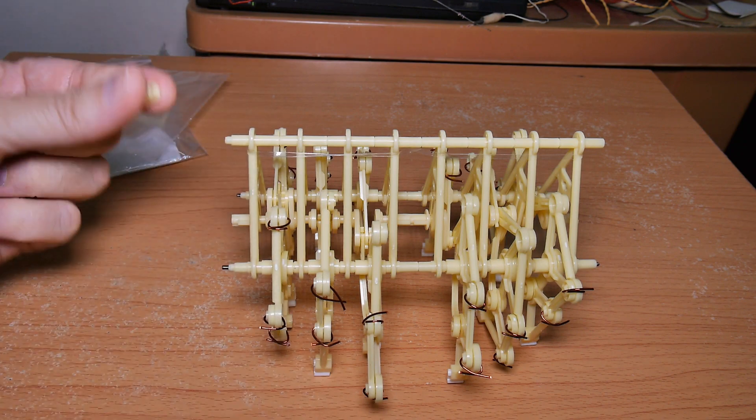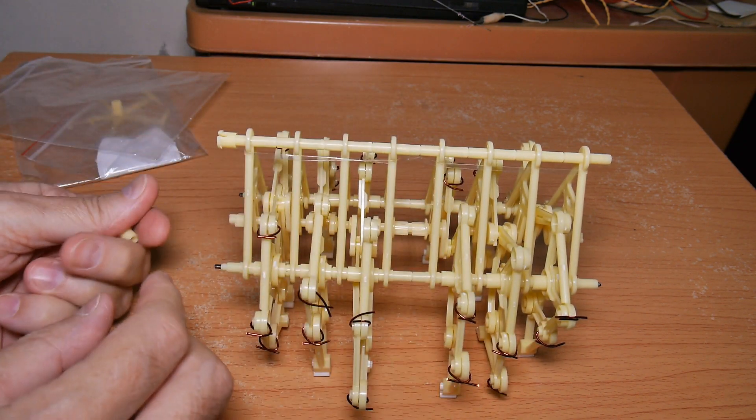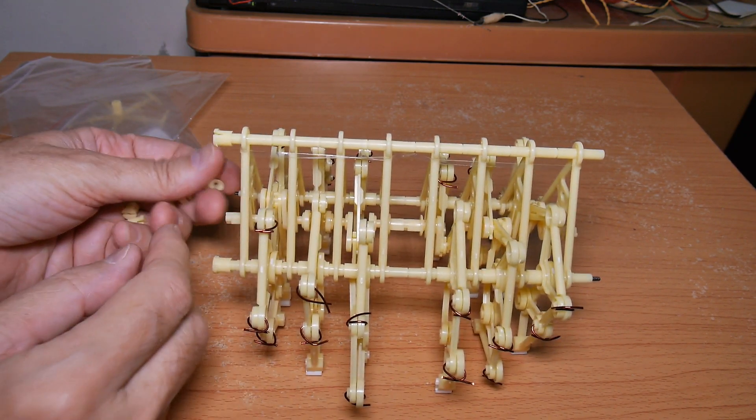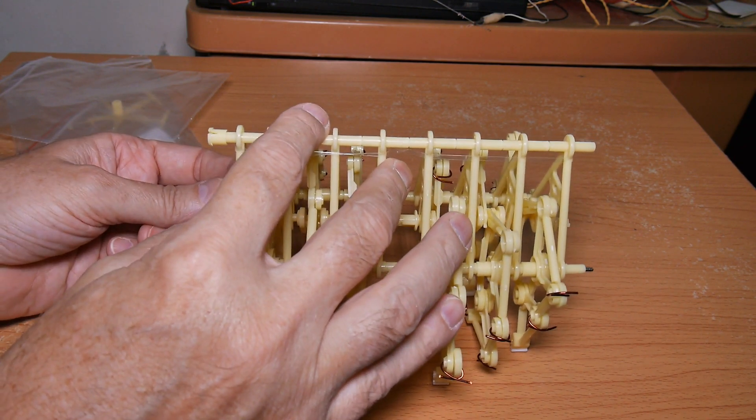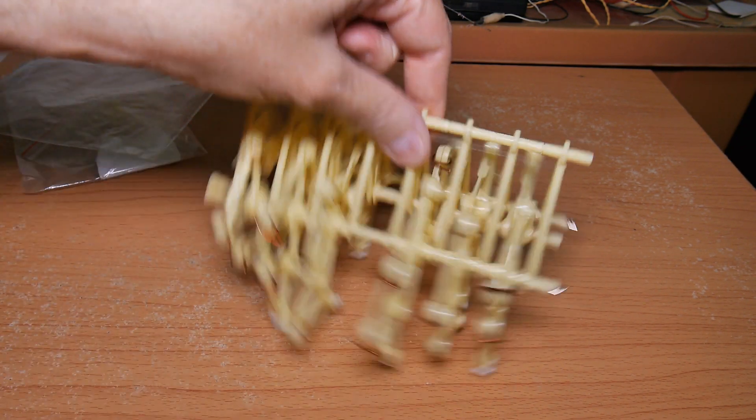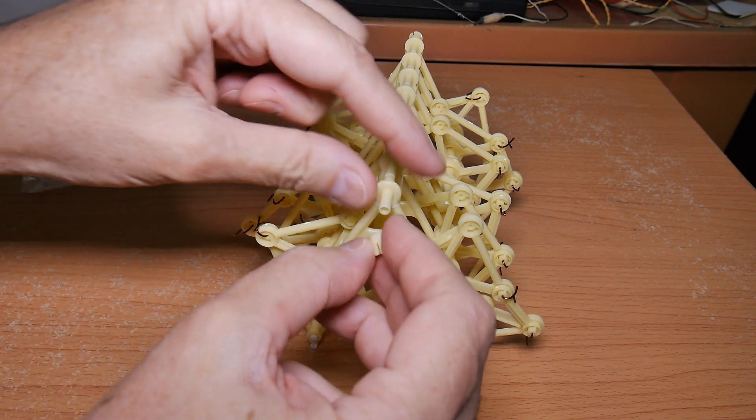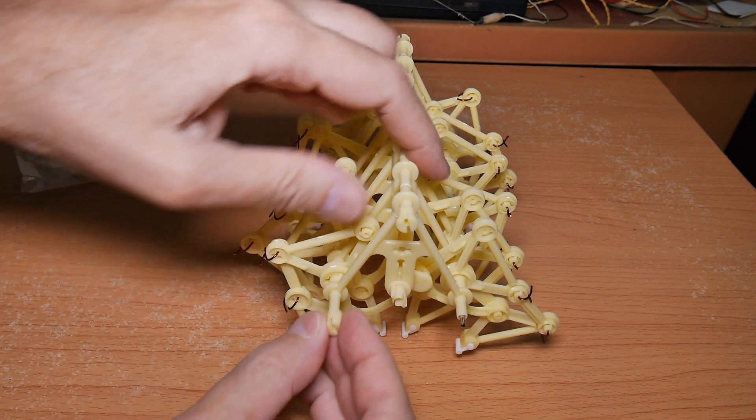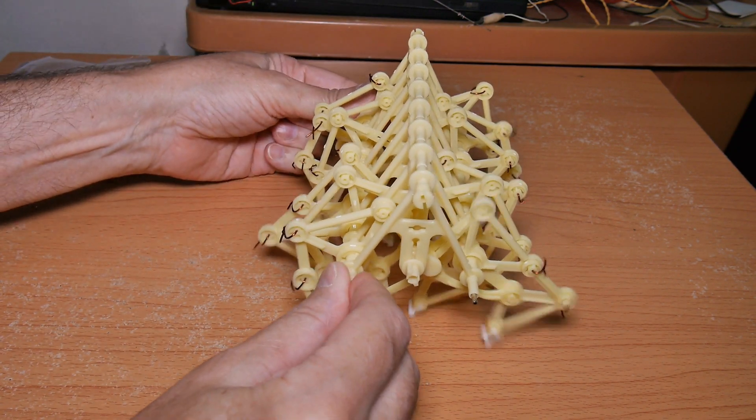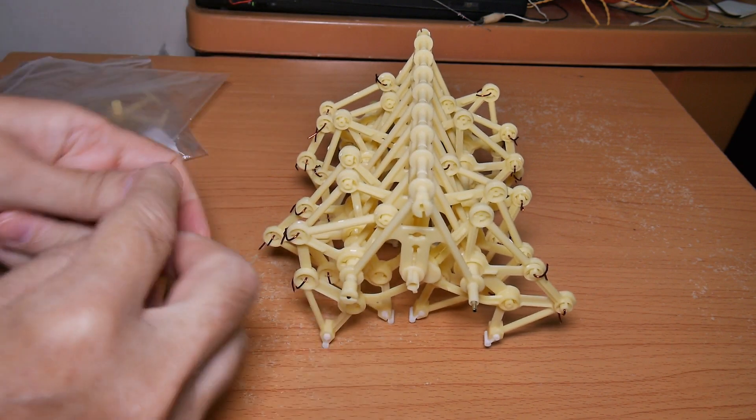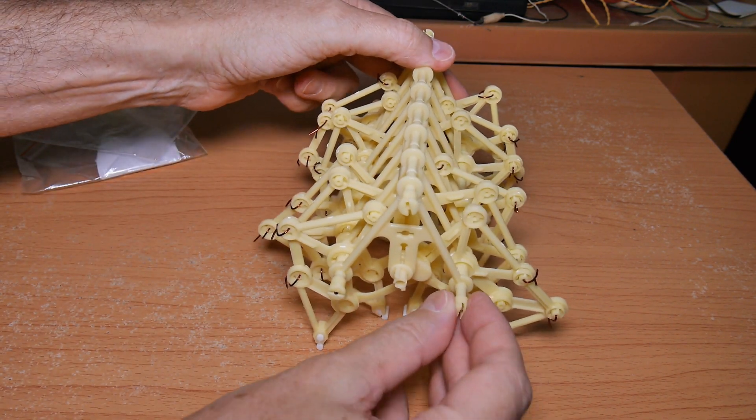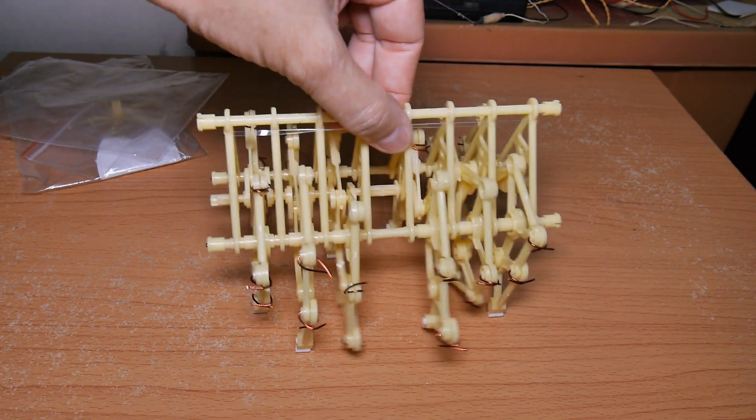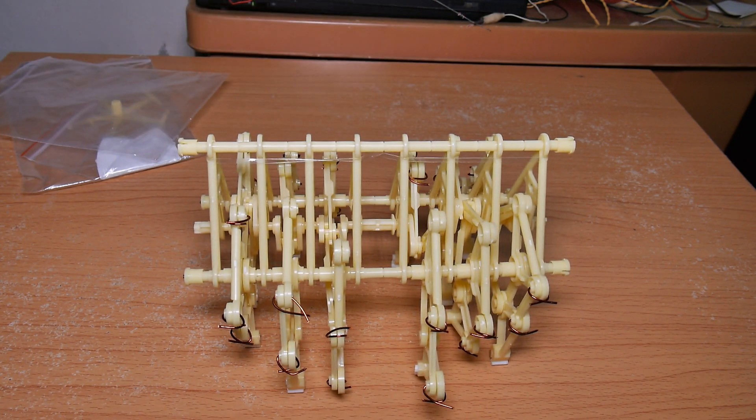Then we put on these stoppers, they call them, just on these end pieces. And there's six of them. Like this. And then on this end. One, two, three. And that's that. What's next?